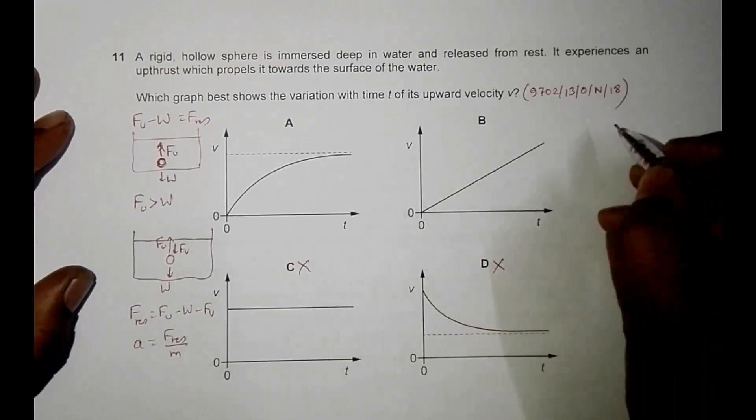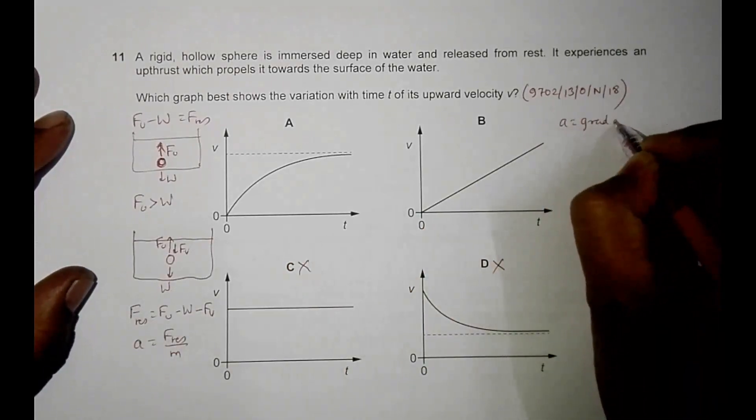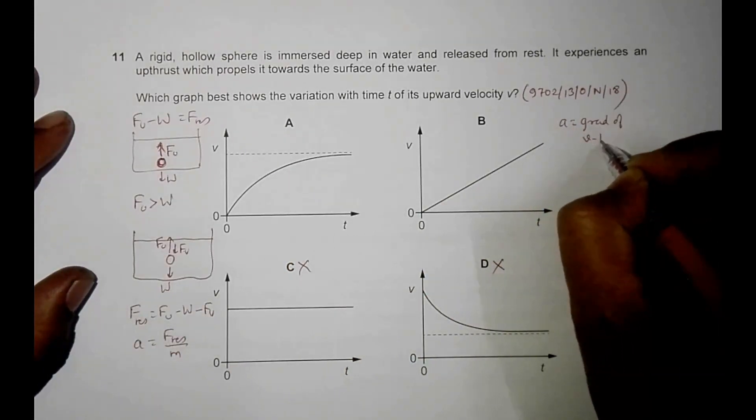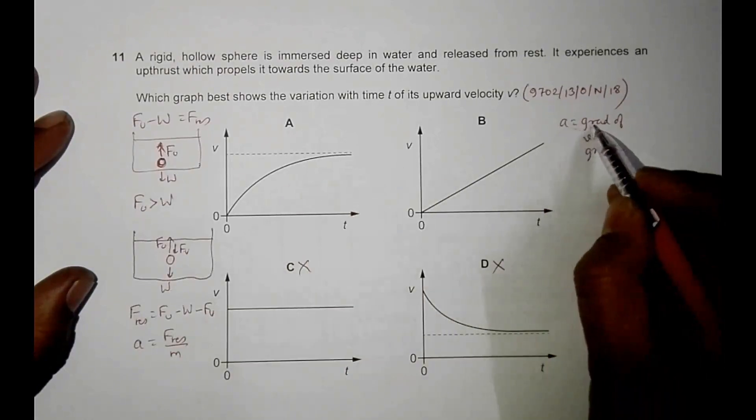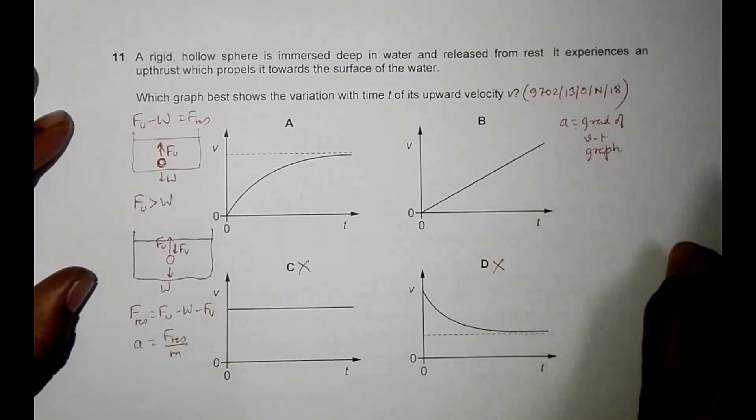Now in case of a v-t graph, acceleration means the gradient of the v-t graph. We have to search for that graph in which this gradient is decreasing.